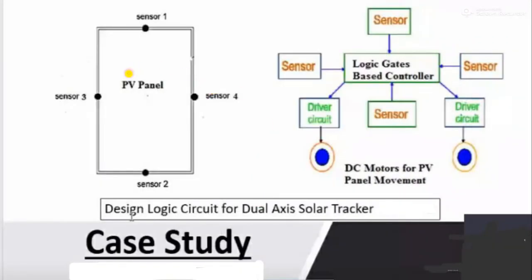You can see that here is a PV panel which is covered with 4 sensors in the direction north, south, east and west. The purpose of these 4 sensors is to adjust the PV panel in the direction of sunlight.